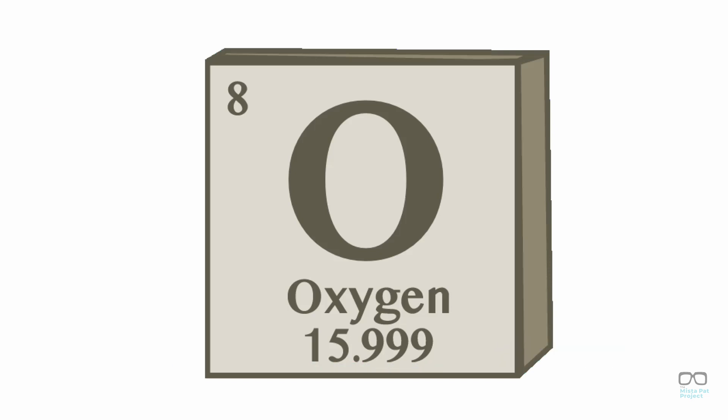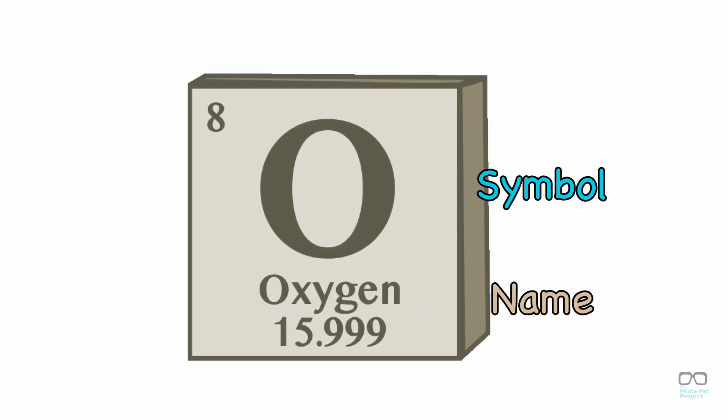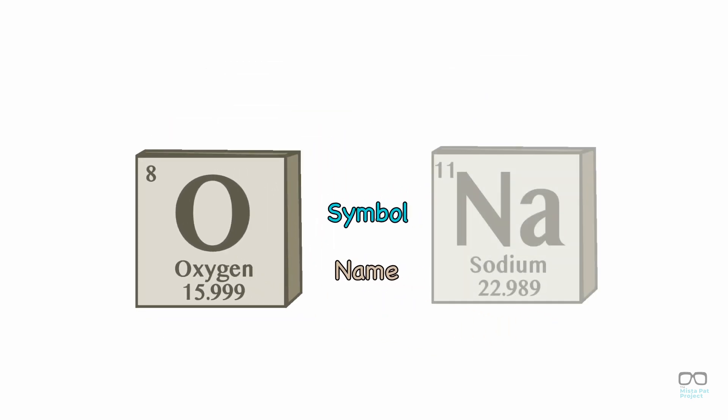The periodic table also shows us the symbol and name of an element. But be careful, not all elements are as simple as oxygen. Instead of using the first letter of its name, a sodium atom symbol is Na, and it thought we wouldn't notice. Yeah, right!